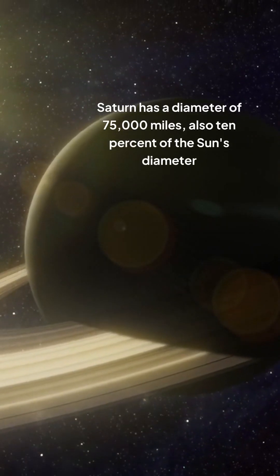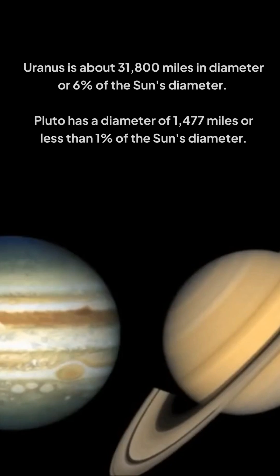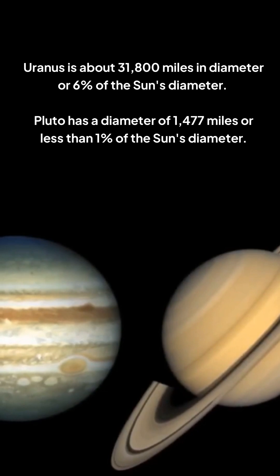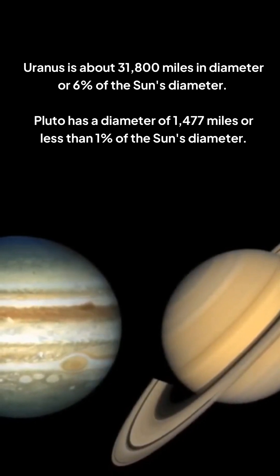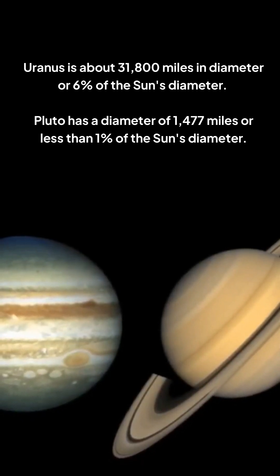Saturn has a diameter of 75,000 miles, also 10% of the sun's diameter. Uranus is about 3,800 miles in diameter, or 6% of the sun's diameter. Pluto has a diameter of 1,477 miles or less than 1% of the sun's diameter.